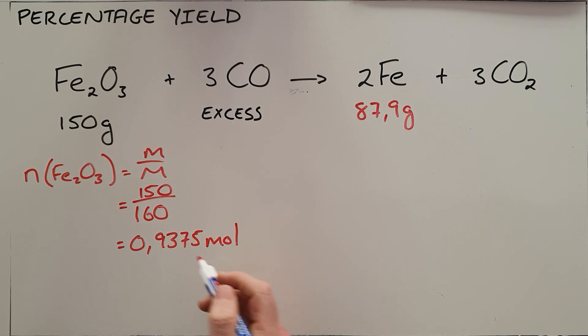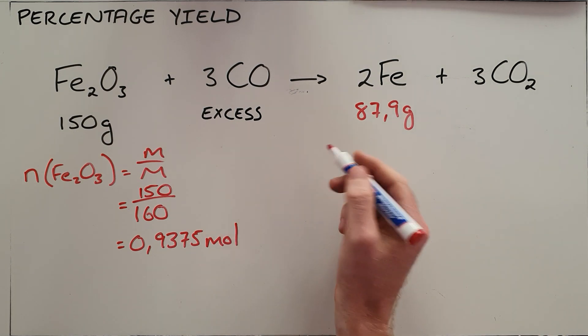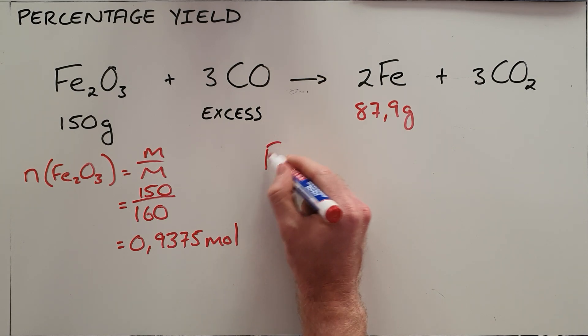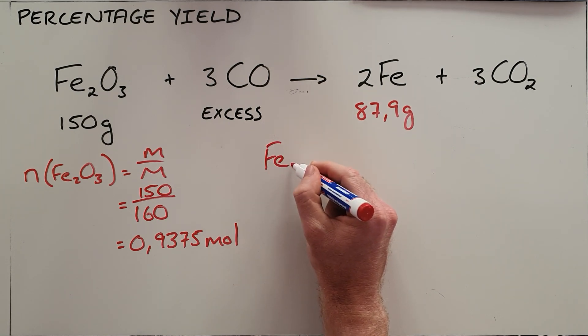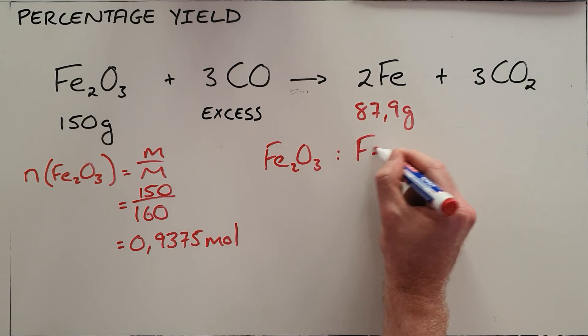Note that I have not rounded this off, because as you move through this question, if you round off at every point, you would end up with a very different answer. Our next step is to convert that into an amount of iron that we would expect, and we do that by looking at our ratio of iron oxide in the reactants to iron in the products.